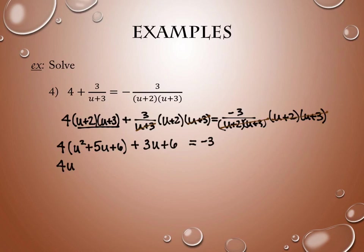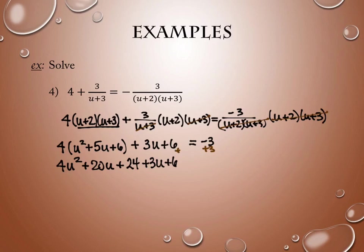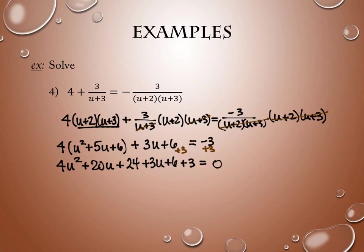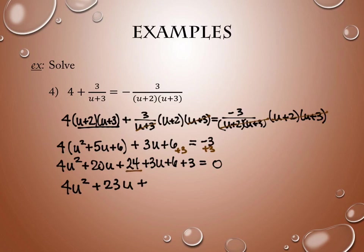Now multiplying the 4 through: 4U squared plus 20U plus 24. Adding the middle term 3U plus 6, and adding the 3 in the same step, I combine all like terms on the left. I should end up with a U squared term, a U term, and a constant. Starting off: 4U squared, 23 U's, and a constant value of 33.